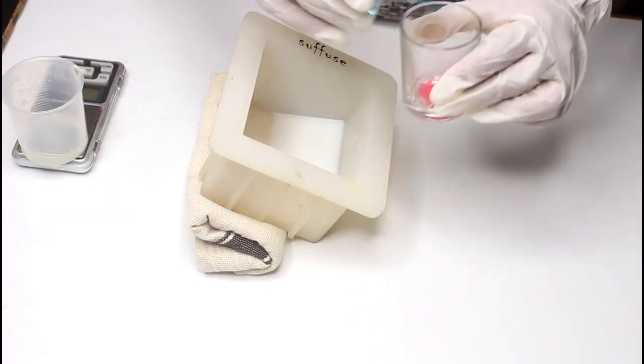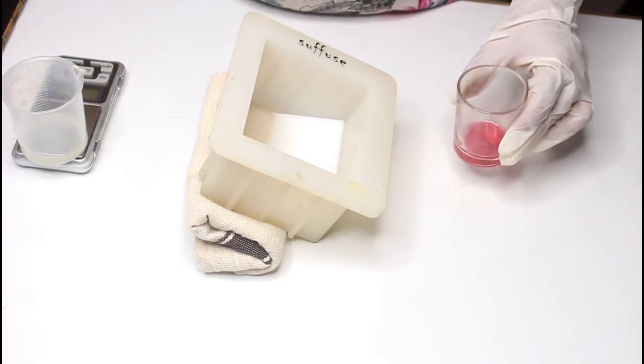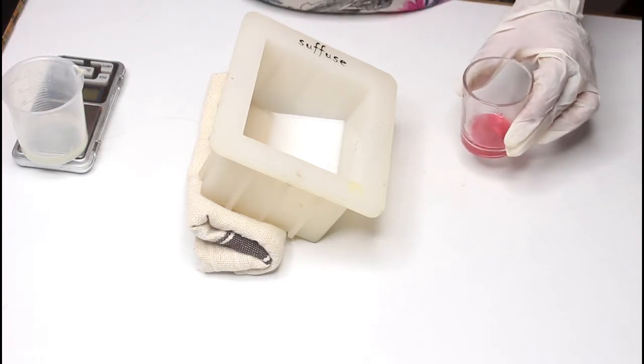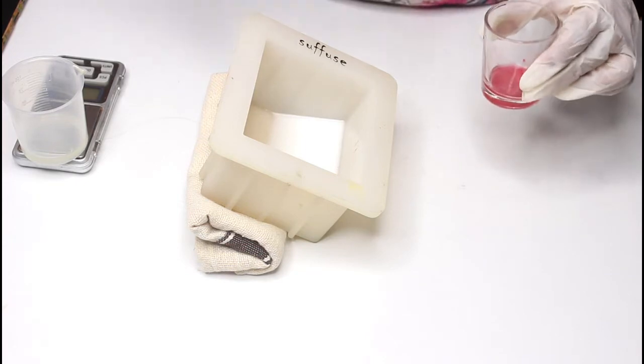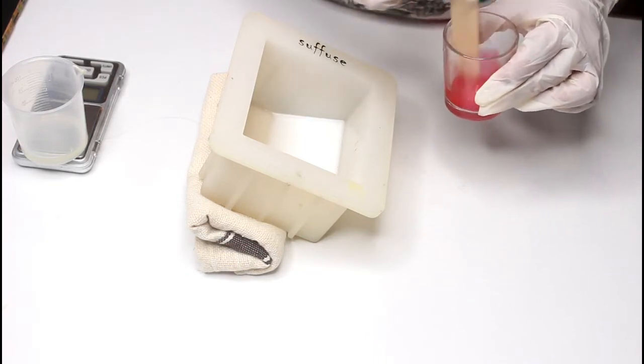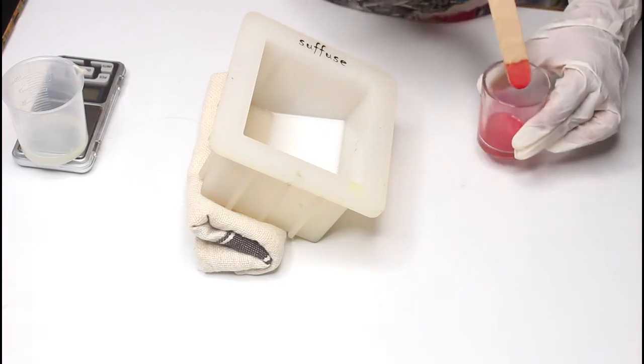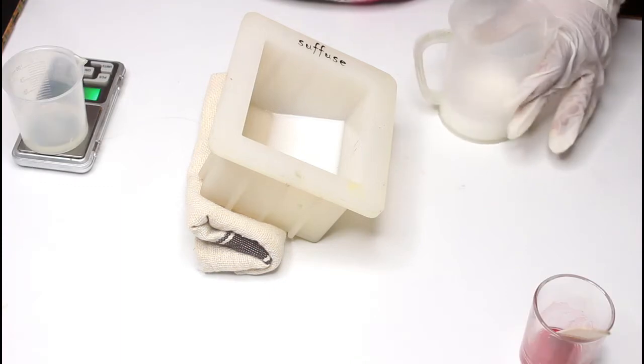So my second layer is red. I'm going to add some rubbing alcohol to this red mica of mine. I have bought all my micas from Micas and More—I got it delivered to India. I have mixed that with a little bit of rubbing alcohol so that you disperse all your micas properly.